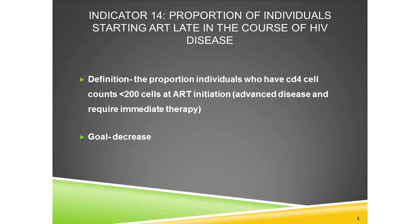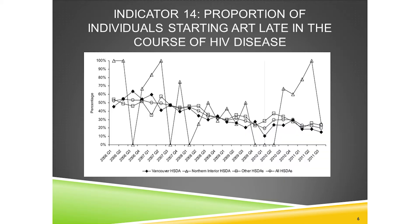We know what treatments patients are on, when they start and stop, how their CD4 and viral loads respond, and what services they access. As an example, one indicator we look at is the proportion of people starting HAART late in the course of HIV disease — those with a CD4 of less than 200, who clearly are in great need of therapy. We want to decrease this proportion. The data can look messy but each line represents a different HSDA.